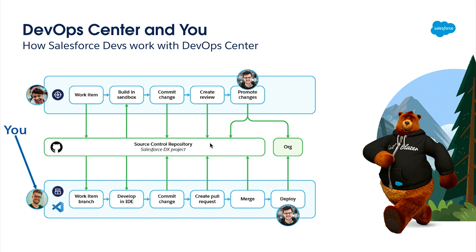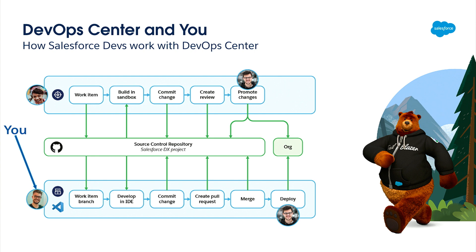What I did was educating declarative developers in using version control tools and the command line — I've explained Git to them for about seven years now. That was a steep learning curve. DevOps Center is here to solve that problem. It is the replacement for change sets, in a way. But it also allows declarative people to pull in their changes, just as a developer does, in a nice and neat user interface, bringing these two worlds together and making release management easier.